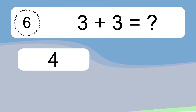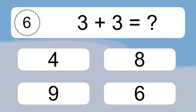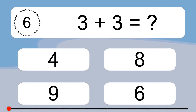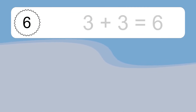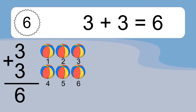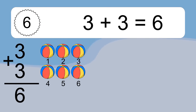3 plus 3 equals what? 3 plus 3 equals 6. Let's count it: 1, 2, 3, 4, 5, 6.